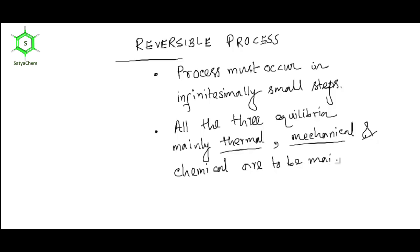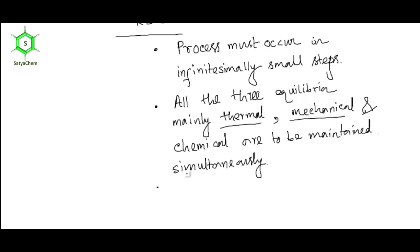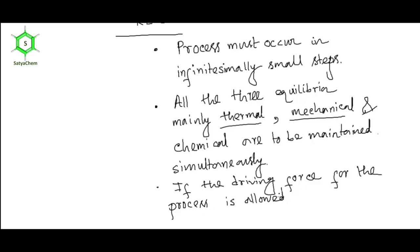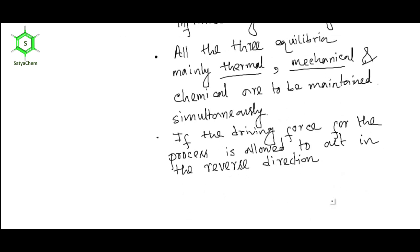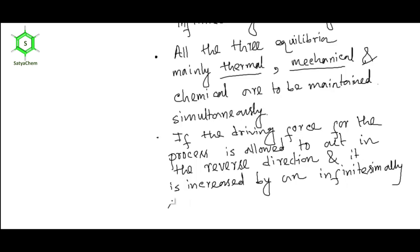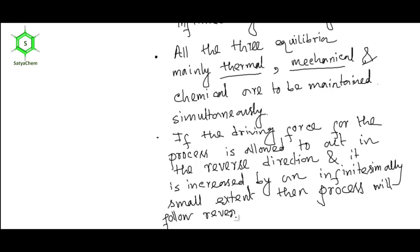The three equilibria — thermal, mechanical, and chemical — are to be maintained simultaneously. Third condition: if the driving force for the process is allowed to act in the reverse direction and it is increased by an infinitesimally small extent, then the process will follow the reverse path in an identical manner. So forward and reverse paths are identical.